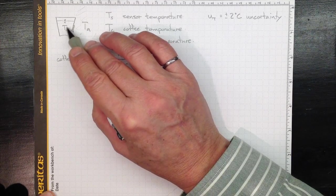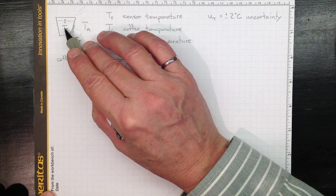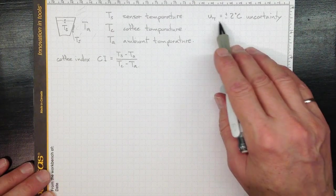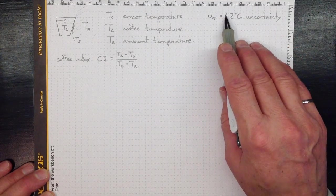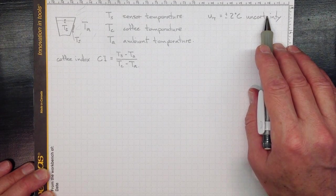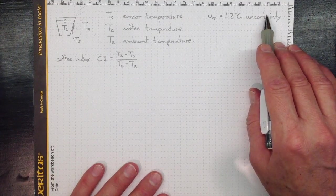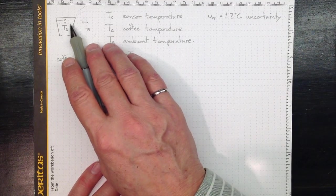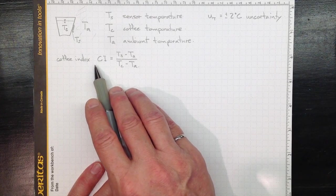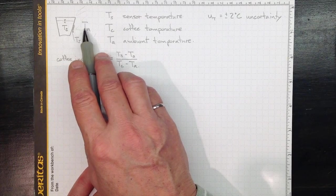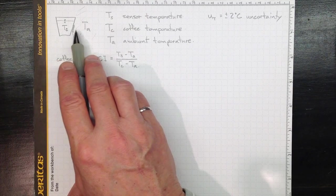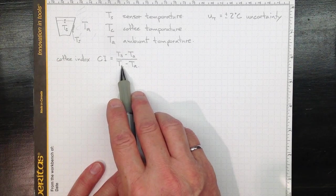So we'd like the difference between TC and TS to be small compared to the difference between TC and TA. We've got uncertainty in our temperature measurements. In this case let's say it's plus or minus 2 degrees Celsius, typical of some of our transducers. We can indicate how well we're succeeding in making this measurement with what I've defined as a coffee index. And that's the difference in temperature between the sensor temperature and ambient TS minus TA divided by the difference between the coffee temperature and T ambient TC minus TA.